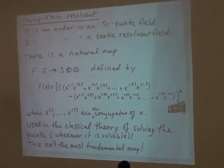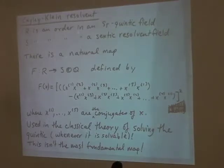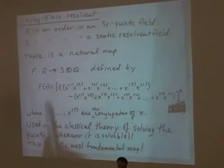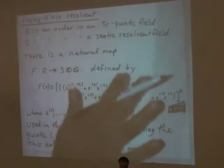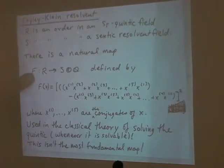The Cayley-Klein map was useful in the solution to the quintic, but the hexagon thing I described was somehow not there in the literature. Using that hexagon, one can make a map of which the Cayley-Klein map is a degree-two covariant. That's the key map needed to understand parametrization of quintic rings.